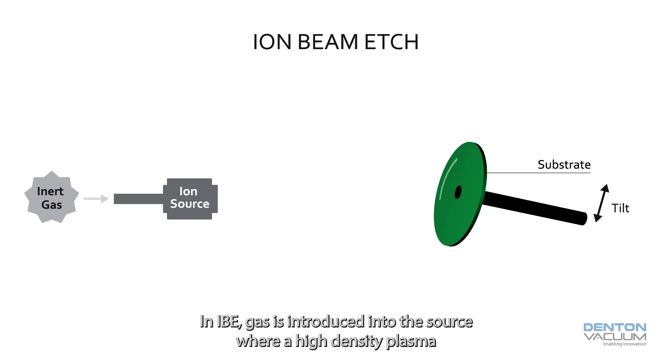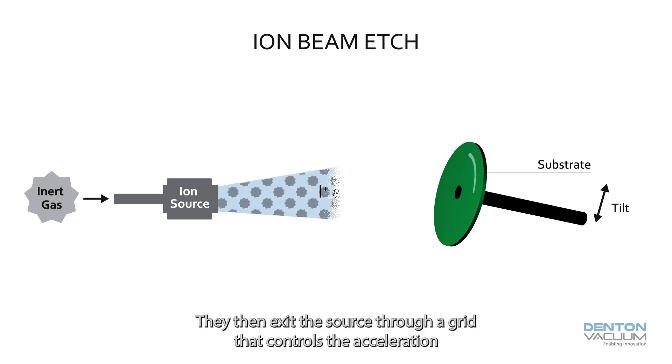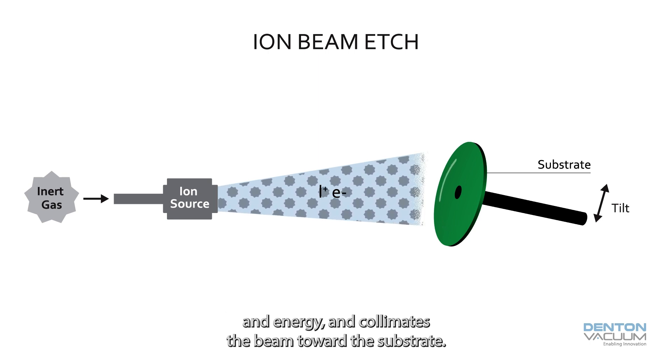In IBE, gas is introduced into the source where a high-density plasma is generated as the gas atoms collide with electrons to become ionized. They then exit the source through a grid that controls the acceleration and energy and collimates the beam toward the substrate.